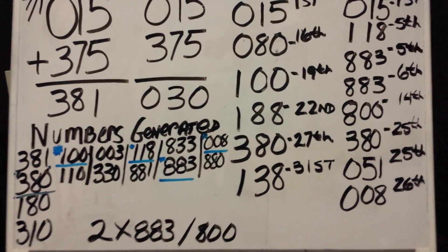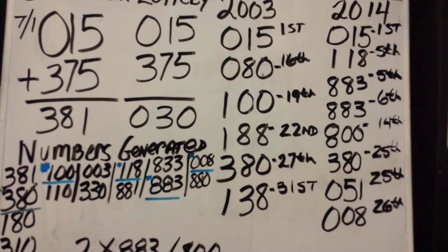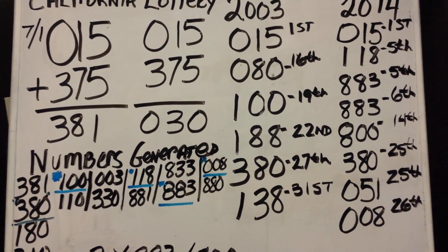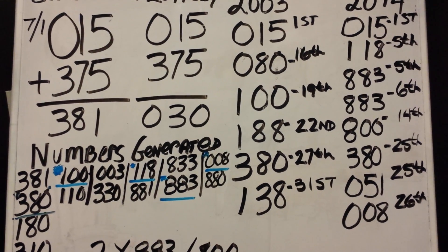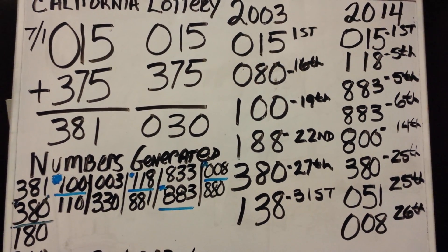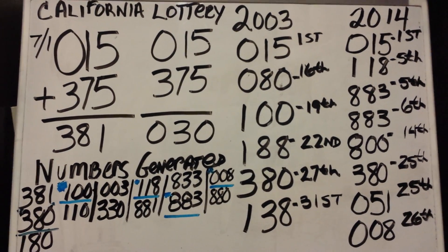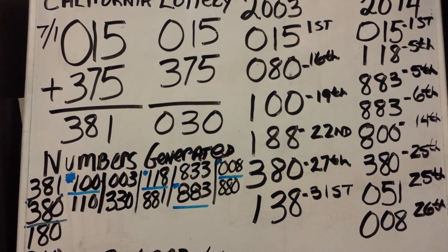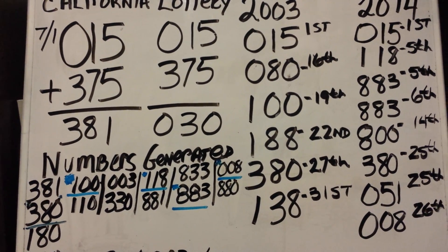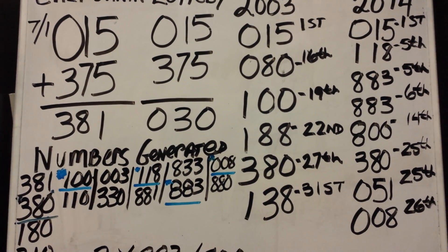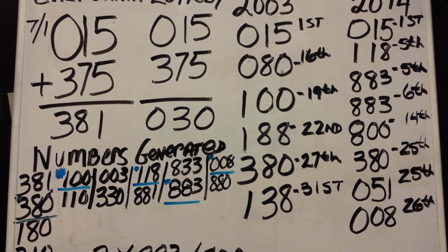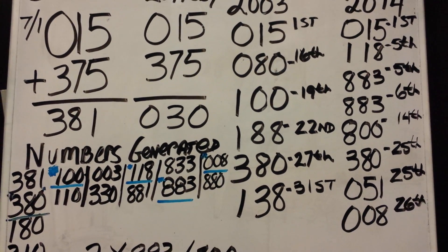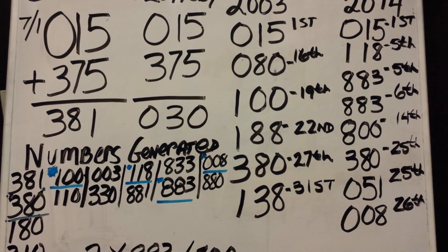Hey, what's up, this is I-eat again, and this is my follow-up video to my first video which was basically Egyptian mathematics. This is a formula used for the California lottery, or any other lottery, but mainly the California lottery because the numbers are generated by computer.